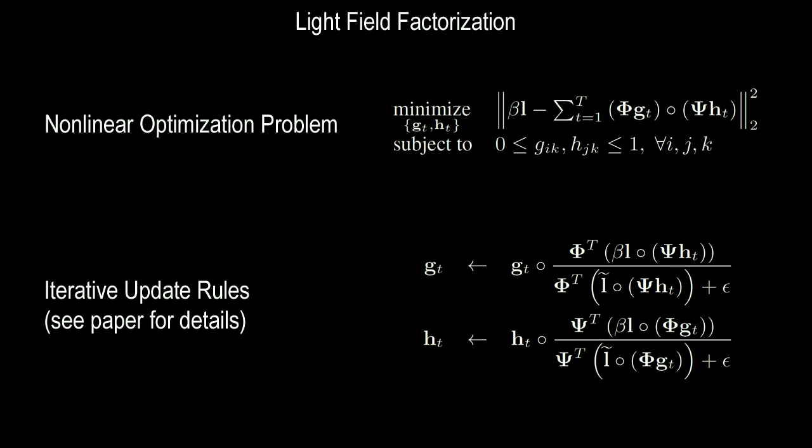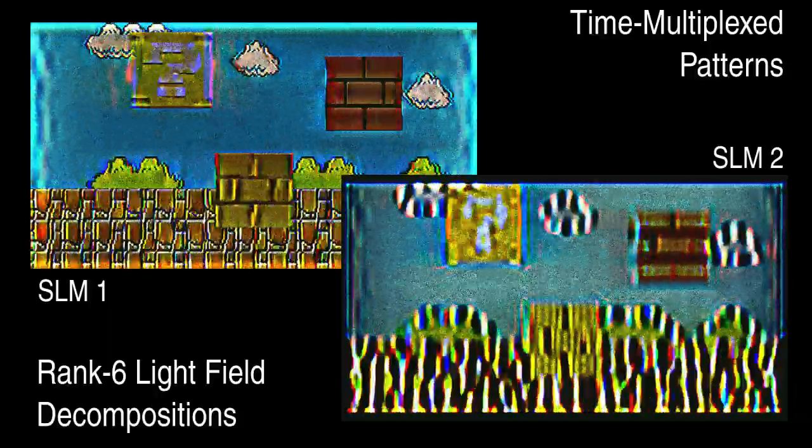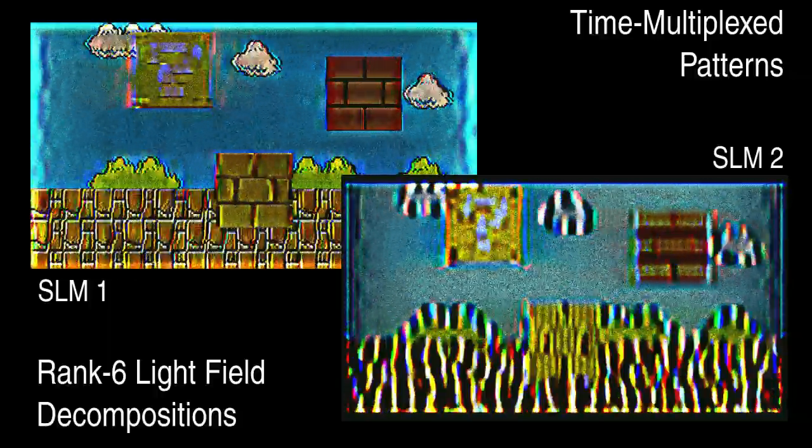We use non-linear optimization techniques to factorize target light fields into low-rank representations that map directly to pixel states of the display. These algorithms are implemented on the GPU for efficient processing. Here is a typical result of the algorithm. Pairs of patterns are automatically computed and displayed on the SLMs at high speed.